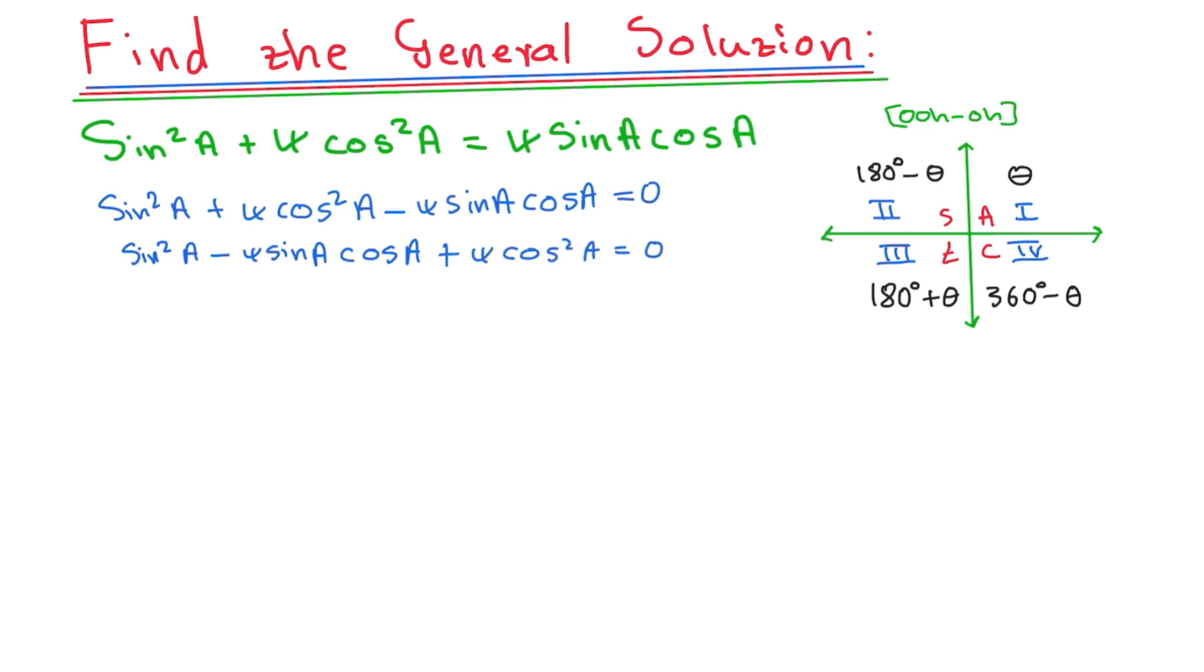I'm going to say sin squared A minus 4 sin A cos A plus 4 cos squared A equals to 0. So now I see this as my x, x, this is y, y squared. So I can factorize this basically. So remember to watch that video in the description.